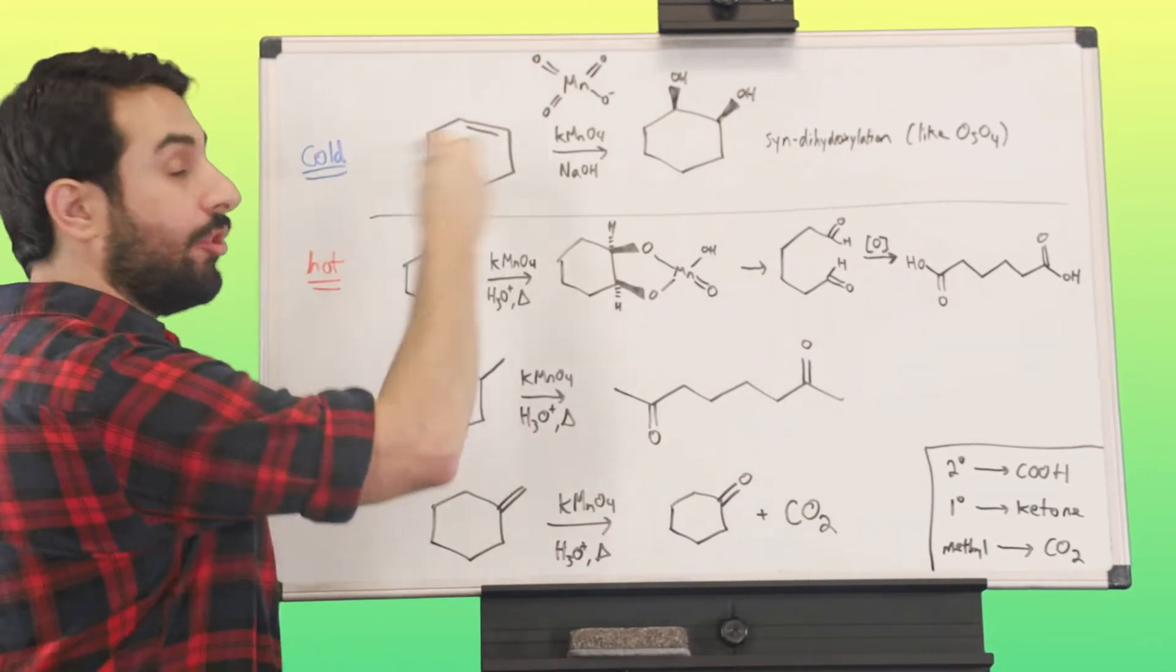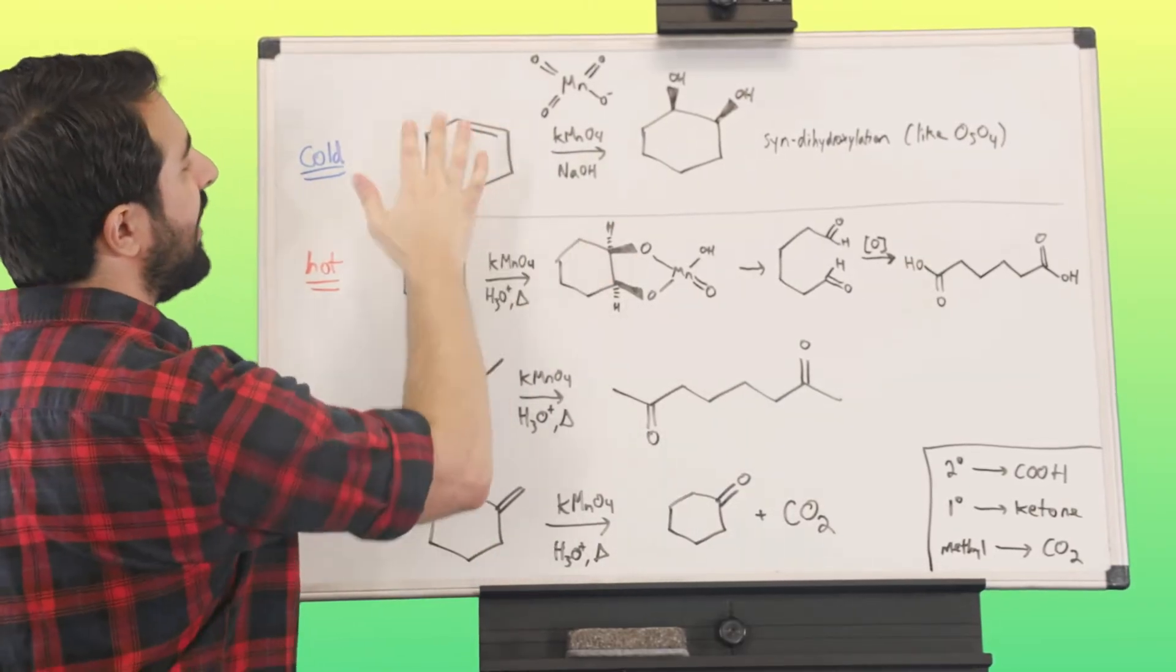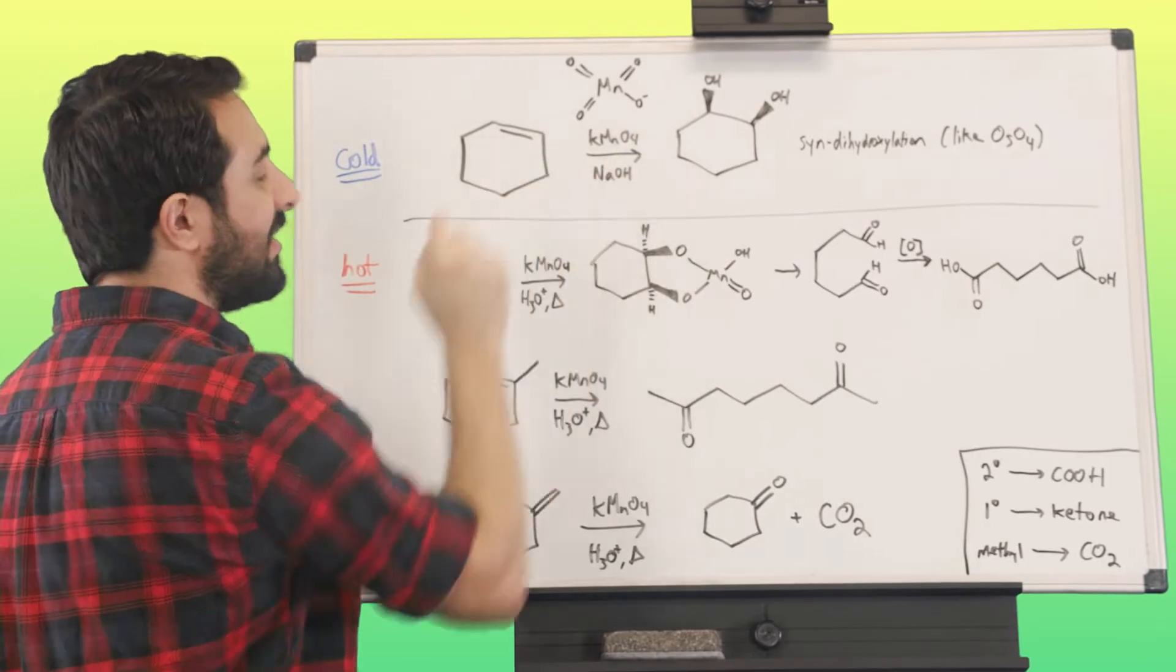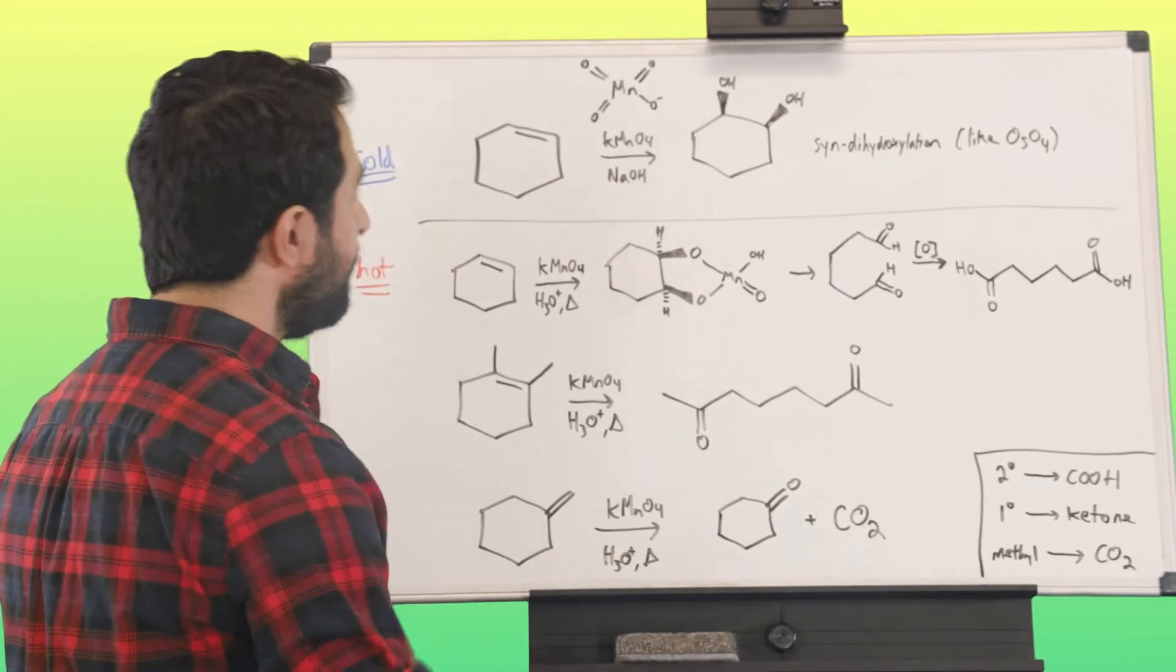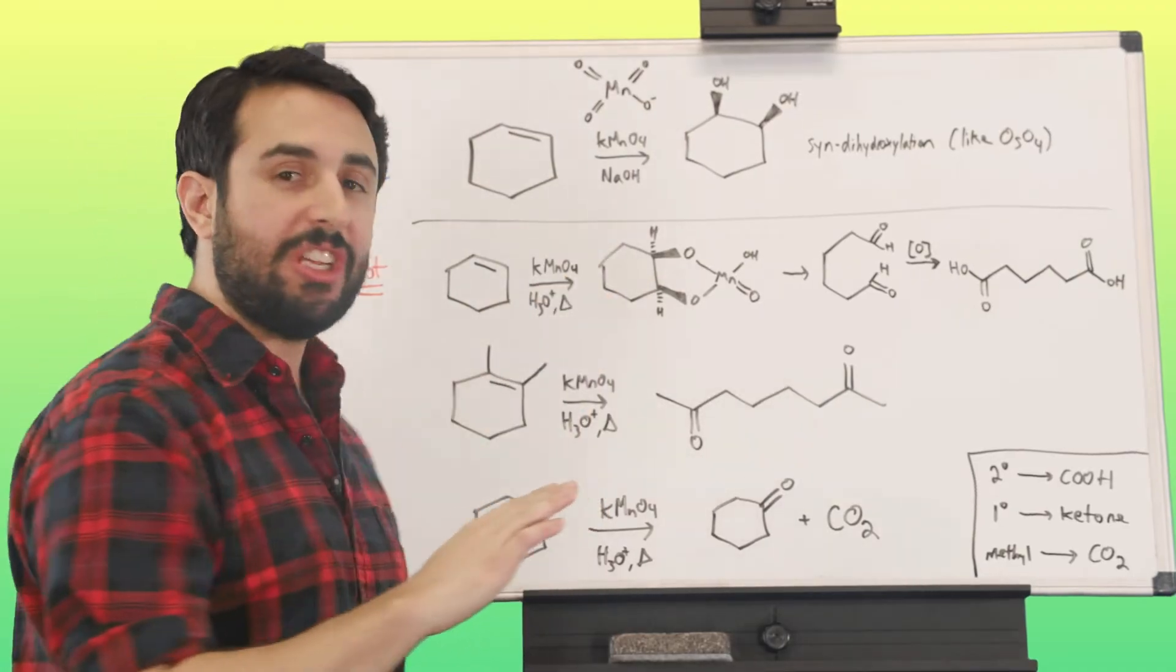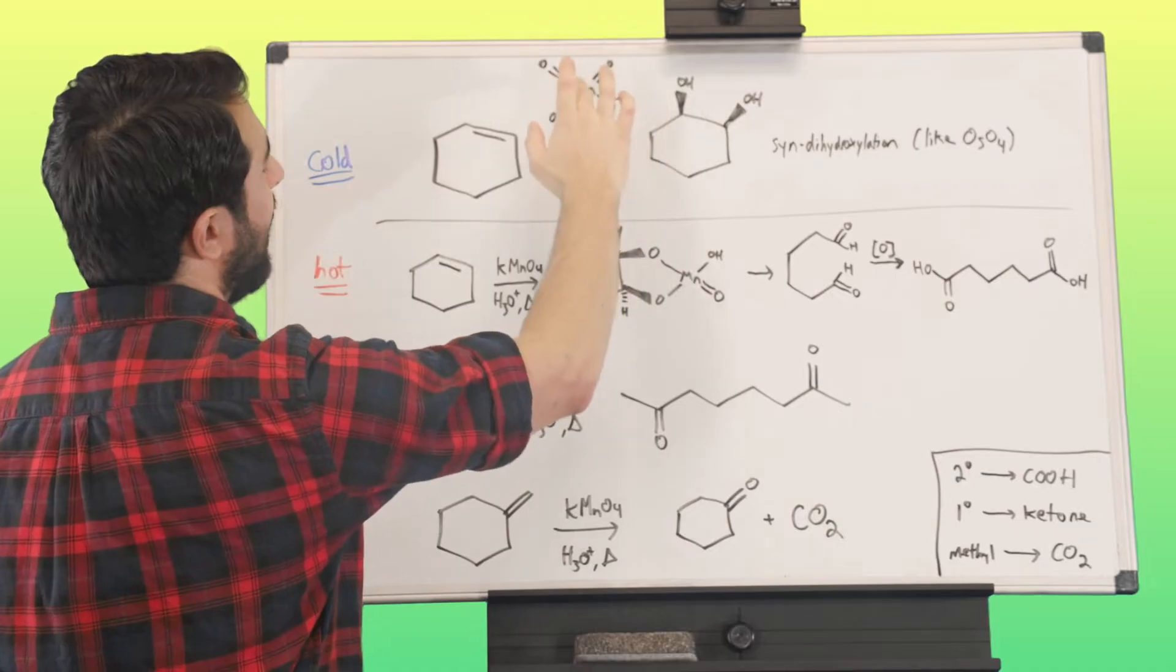First let's take a look at the cold conditions here and what's going to happen. We've got cyclohexene and potassium permanganate in basic conditions with sodium hydroxide. This is going to achieve a syn dihydroxylation. This is the permanganate ion.